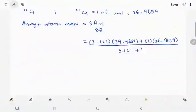So the answer here, we just take two decimal points: 35.45 u.